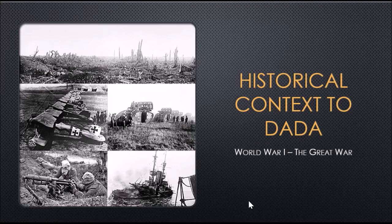Machine guns, barbed wire, flamethrowers, tanks, the use of airplanes, and just the sheer mass amount of death that occurred. In 1914, many people on both sides believed the war would be done by Christmas. But in 1916 alone, Germany lost 850,000 soldiers, France lost 700,000 soldiers, and Great Britain lost 400,000 soldiers. This was horrific, and this was new.